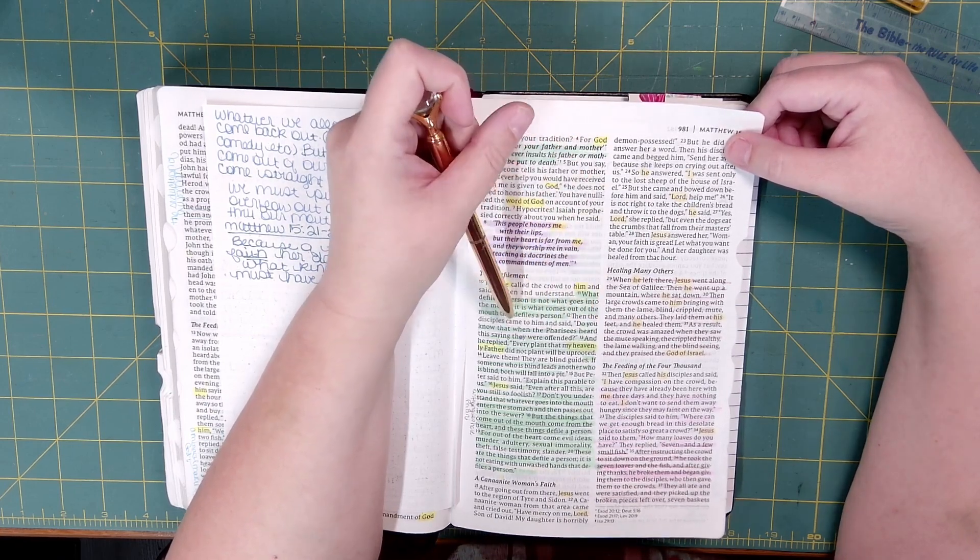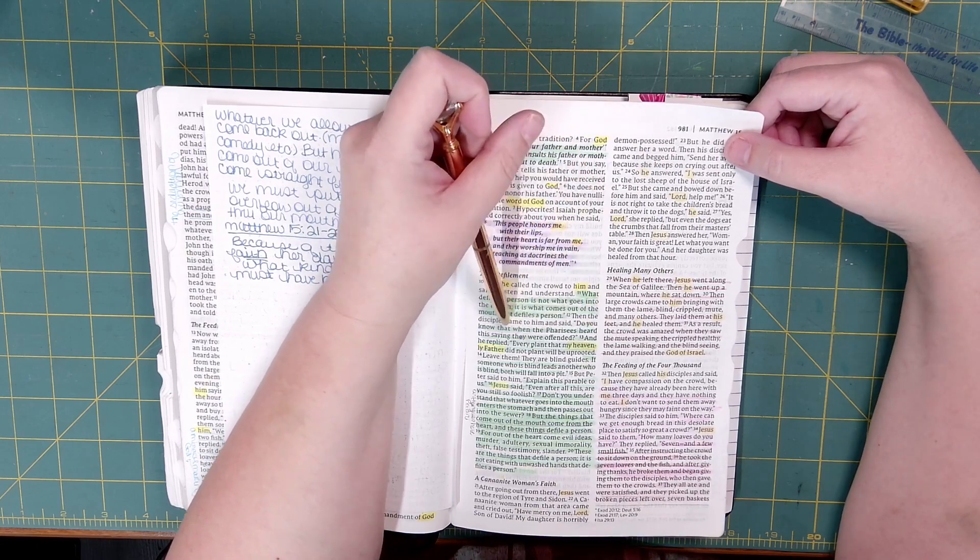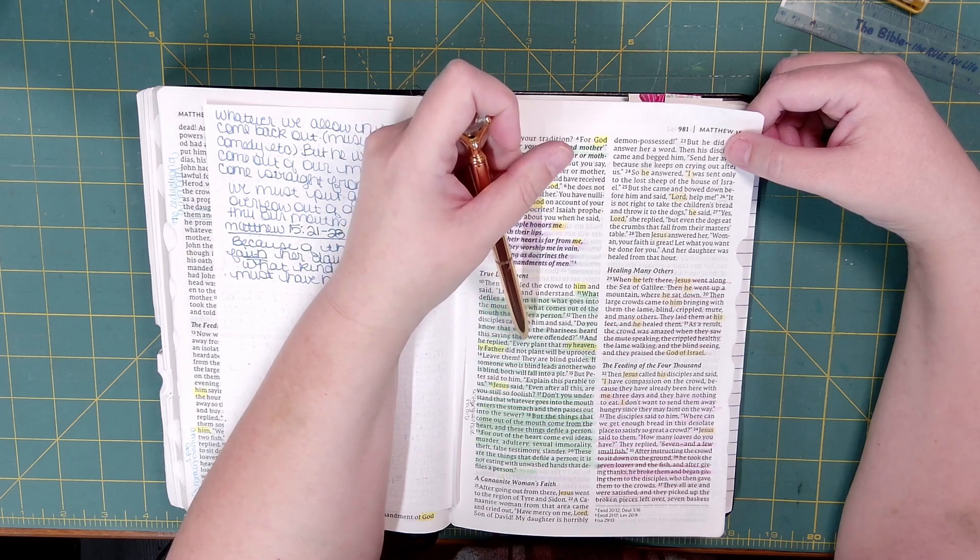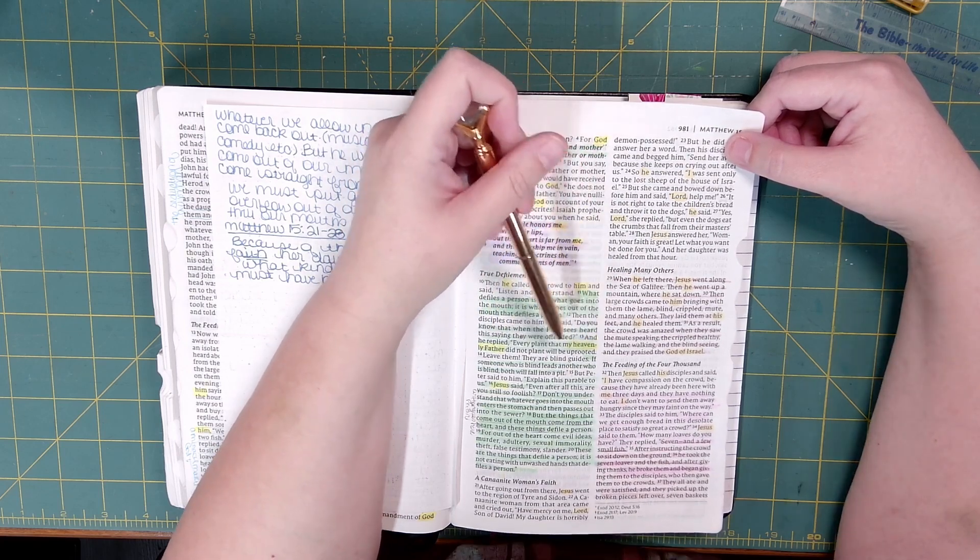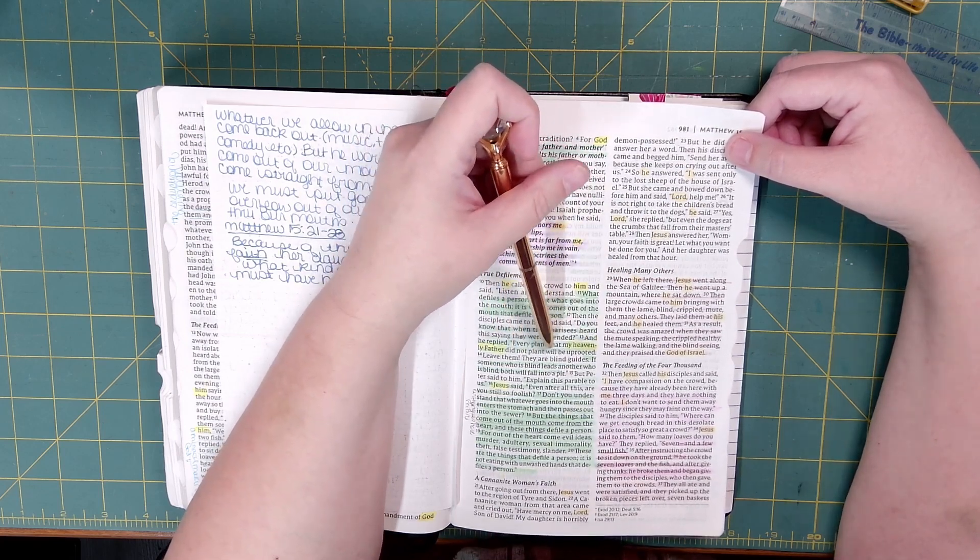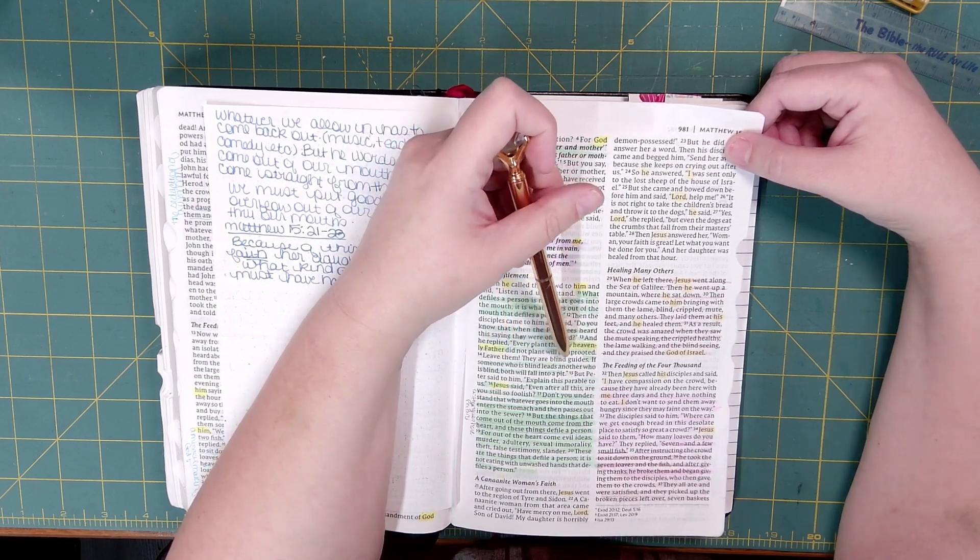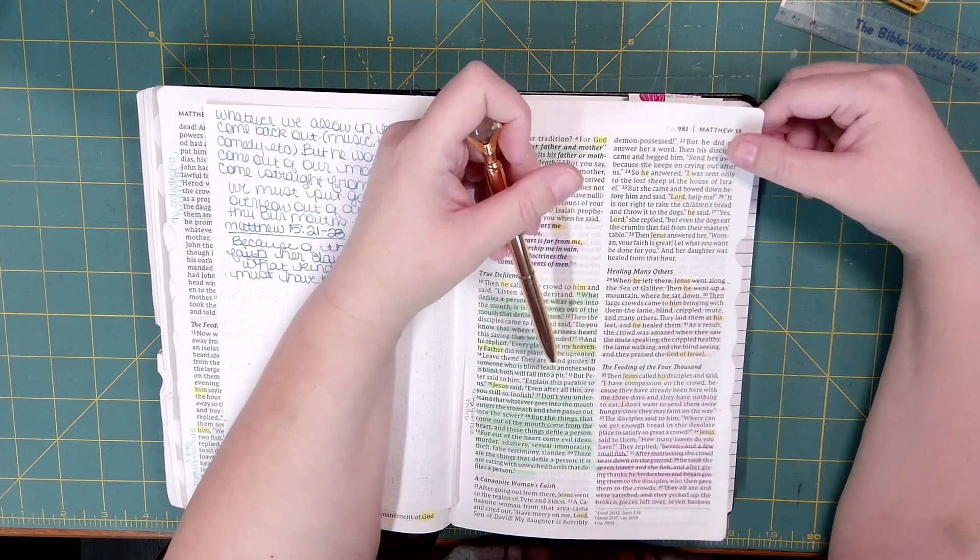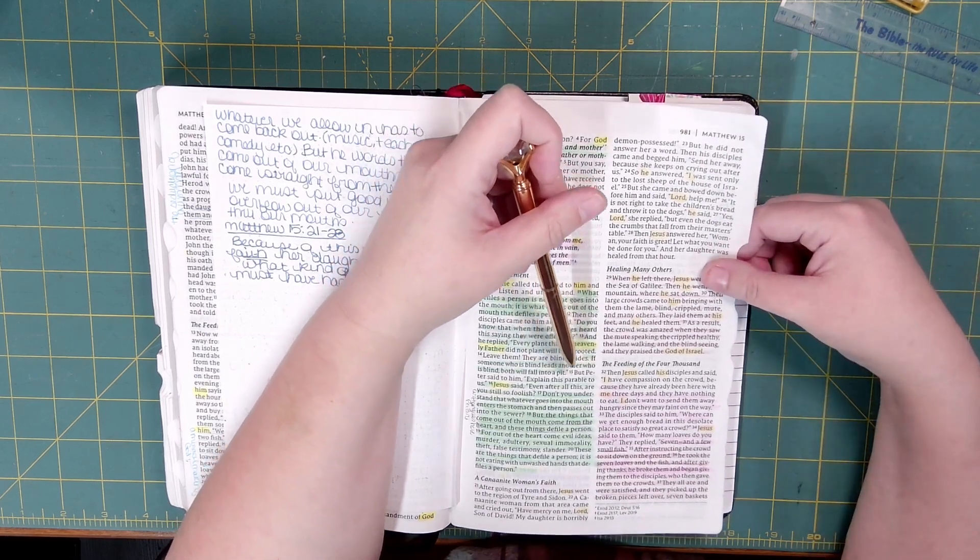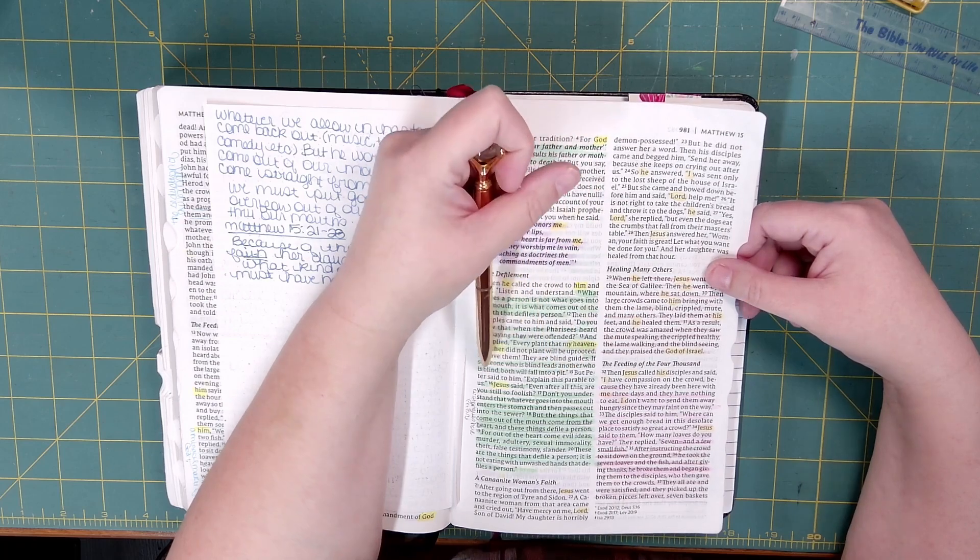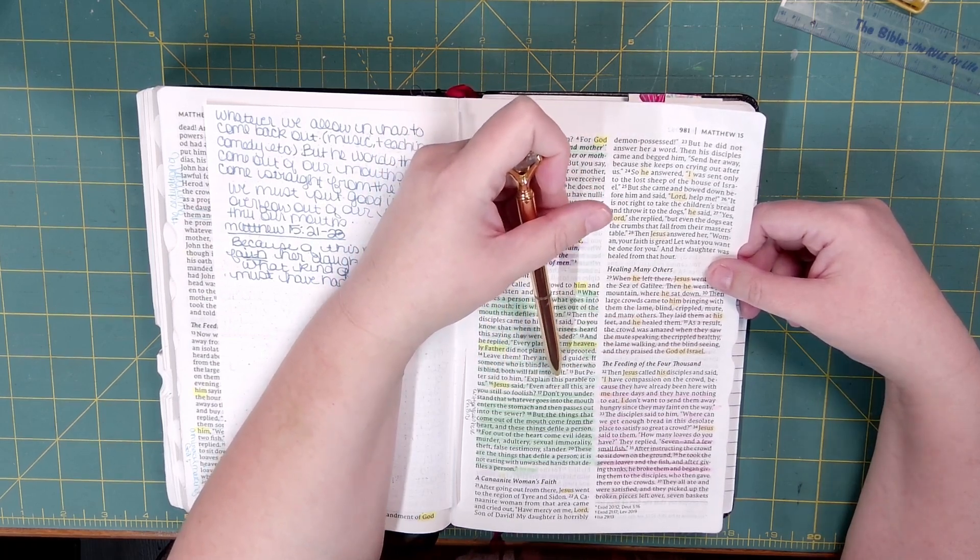Then the disciples came to him and said, Do you know that when the Pharisees heard this saying, they were offended? And he replied, Every plant that my heavenly father did not plant will be uprooted. Leave them. They are blind guides. If someone who is blind leads another who is blind, both will fall into a pit.